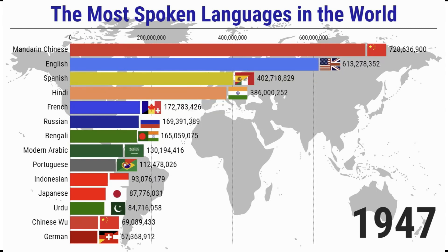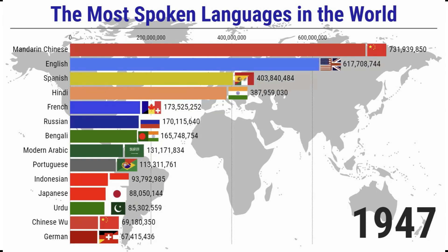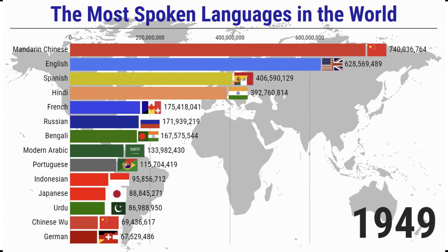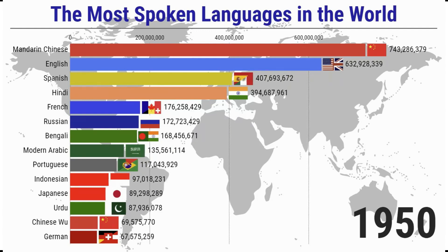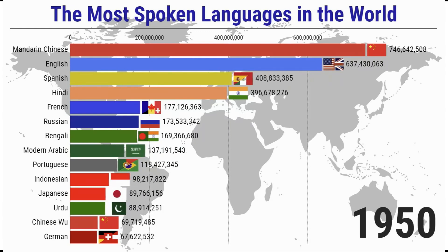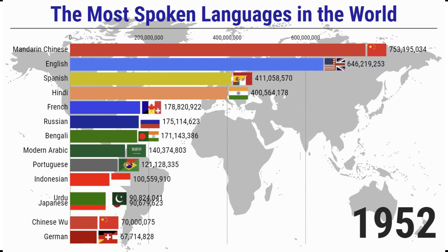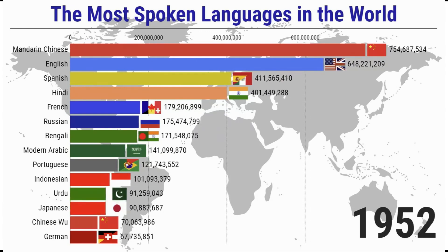For example, there are six official languages of the United Nations: English, Spanish, French, Arabic, Chinese, and Russian. But among all international organizations, 91 percent use English as their official language, 64 percent use Spanish, and 59 percent use French.